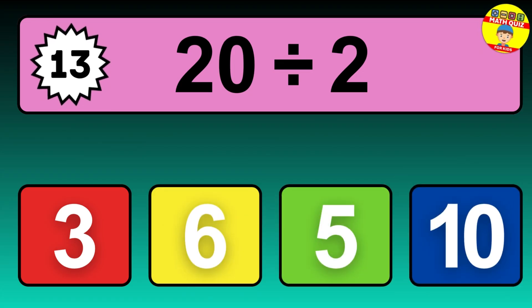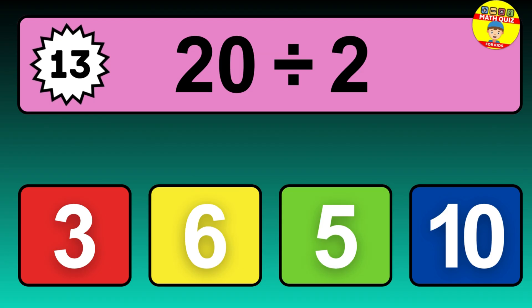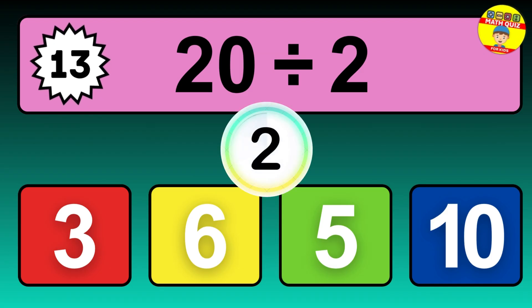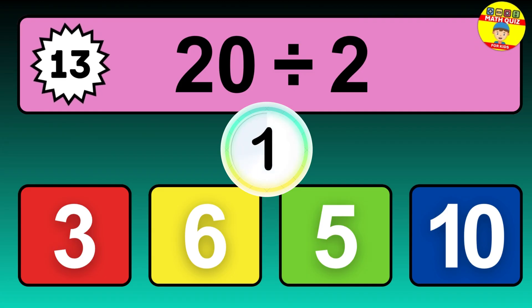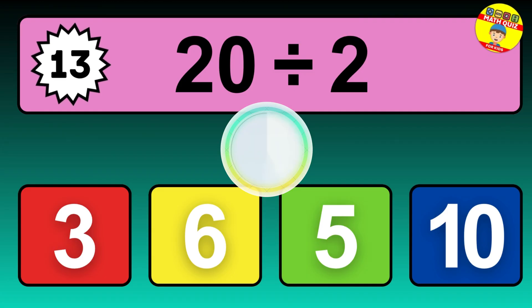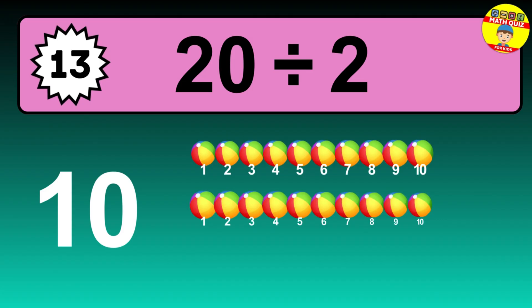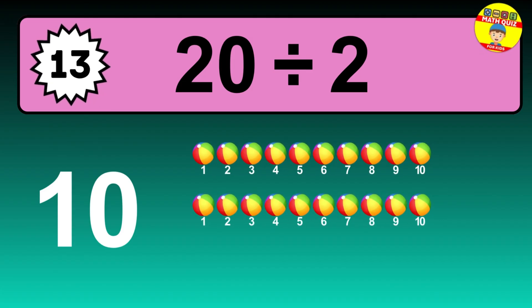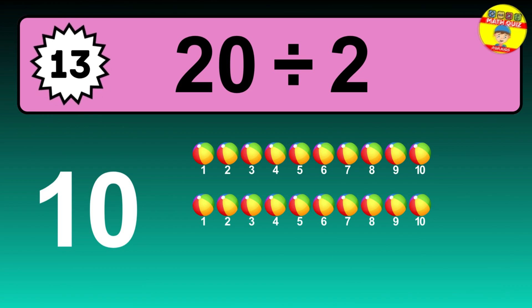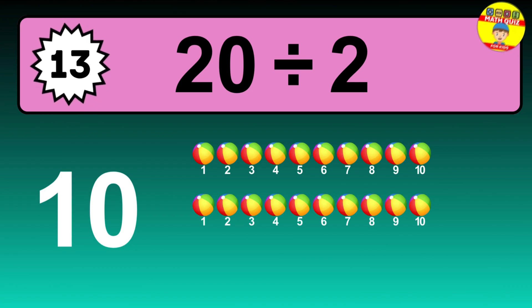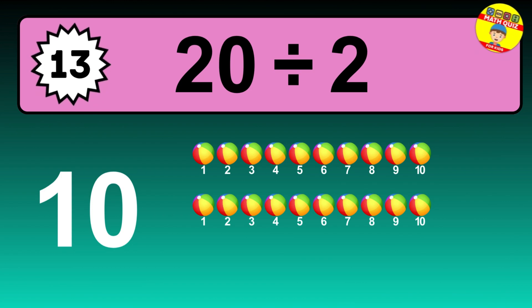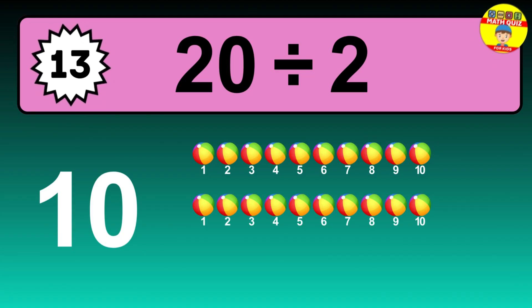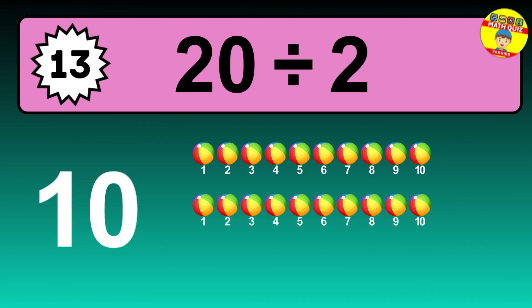What is 20 divided by 2? Picture this — you have 20 objects to divide into groups of 2. How many groups can you make? Let's think about it. Ready to find out? Let's break it down. Let's imagine you have 20 objects. Can you picture them lined up? Now, think about splitting them equally into smaller groups.